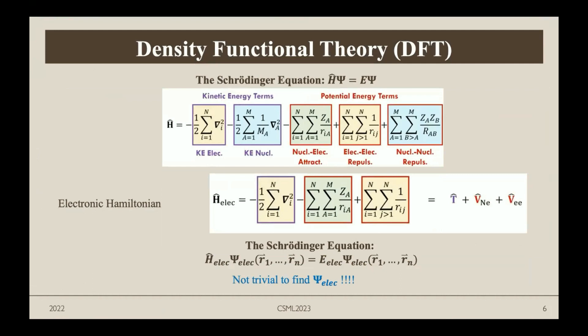This brings us to density functional theory. The Schrödinger equation, where the Hamiltonian times the wave function equals E times psi, is very complicated. However, it can be simplified using the electronic Hamiltonian by the Born-Oppenheimer approximation. It gets much simpler if we only focus on the electronic part. However, it's very hard to find the electronic wave function because the electron-electron interaction is very difficult to solve. It's a many-body problem where all electrons must be simultaneously considered.